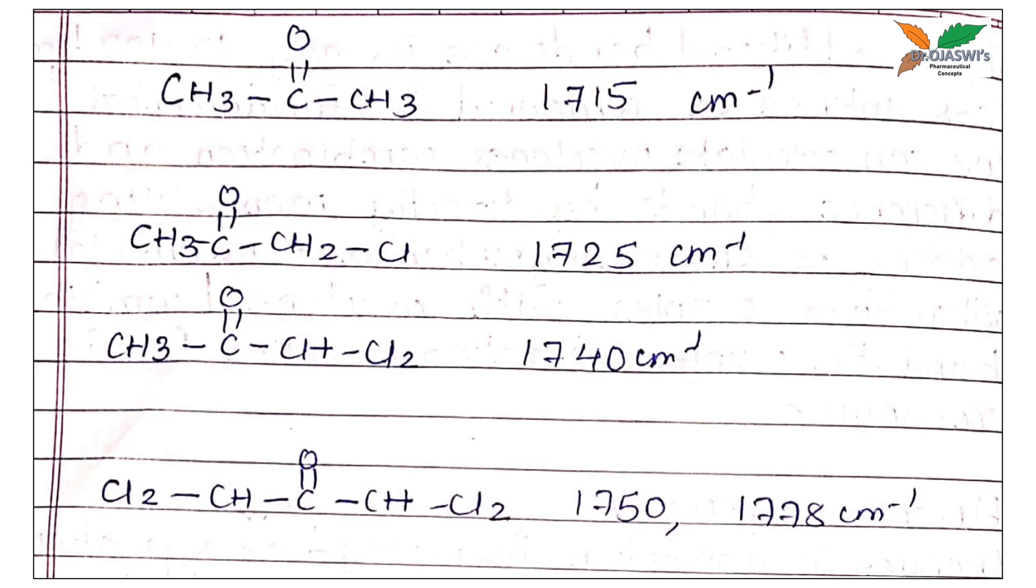If we are taking chloroacetone, the compound is absorbed at 1725 cm inverse. If we are taking dichloroacetone, the compound is absorbed at 1740 cm inverse. So, it indicates that if we increase the electronegativity, the value also increases.